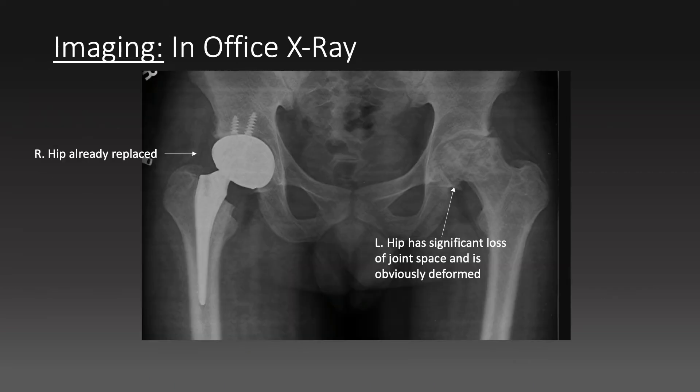In the office I will typically get x-rays of both hips. As you can see in this x-ray, on the left side this patient has already had a hip replacement. On the right side, the hip has significant deformity including joint space narrowing, collapse, and bone spur formation.